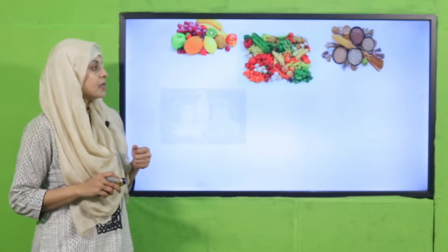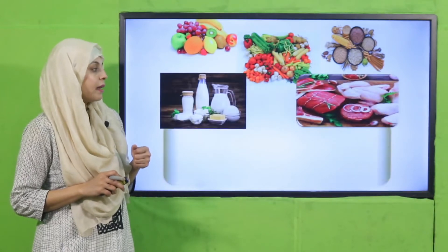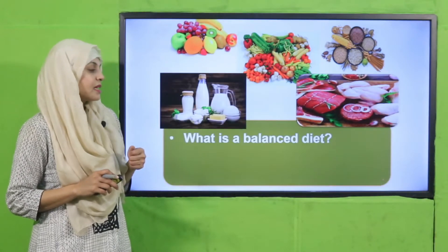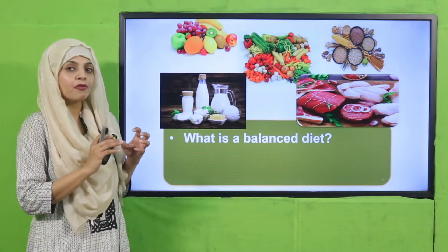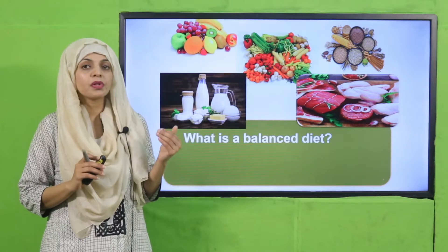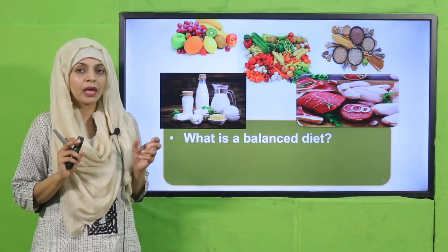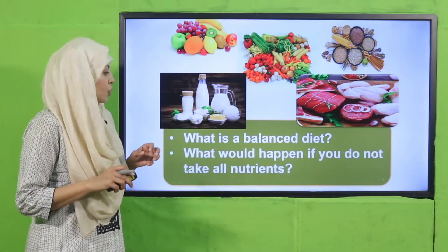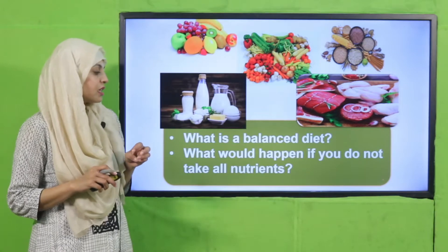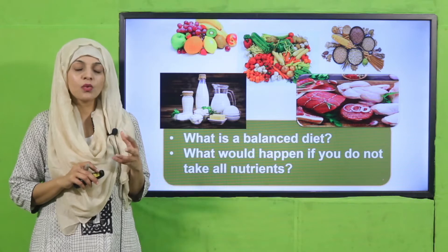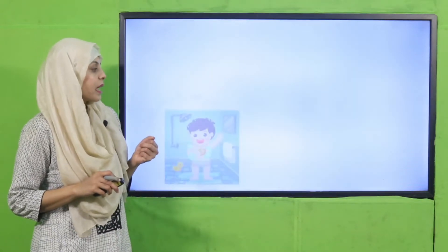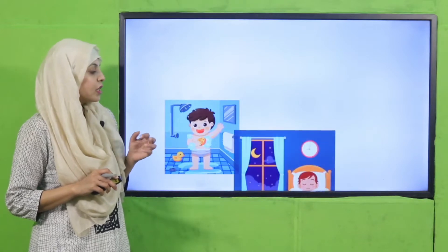Fruits, vegetables, grains, dairy, and meat - tell me, what is a balanced diet? When you include every food from the food groups and take them in a balanced way, this is a balanced diet. And what would happen if you do not take all nutrients? We can become deficient in those nutrients, or we can get ill.